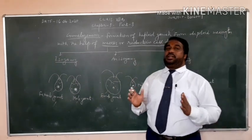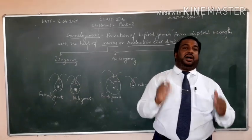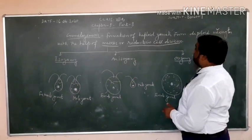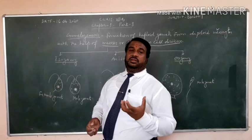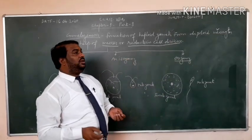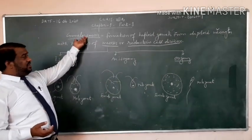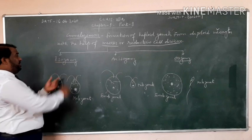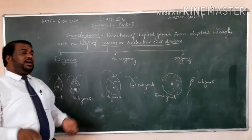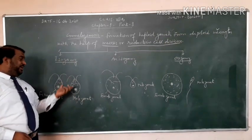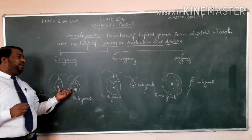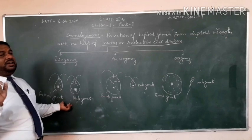Formation of haploid gametes from diploid meiocytes with the help of meiosis or reduction division. Means gametes are haploid in nature, means having half number of chromosomes. And meiocytes, gametes producing cells, this is diploid in nature. Now this gametogenesis has three aspects. One is isogamy. Means here gametes are similar in appearance and both are motile in nature. For example, green alga Chlamydomonas.